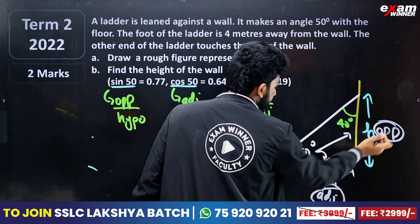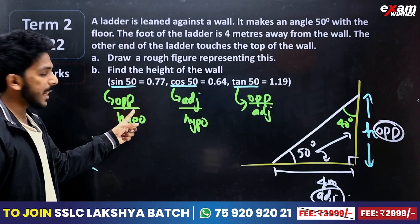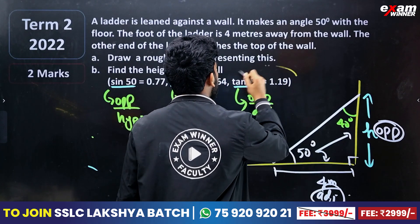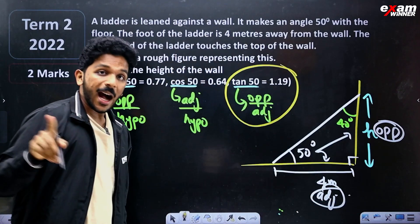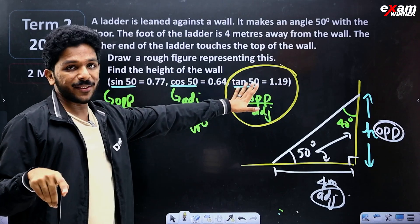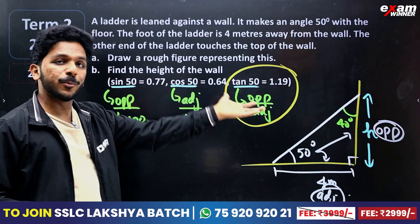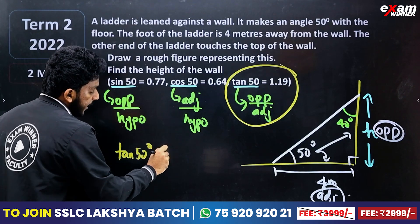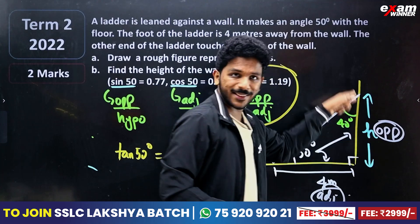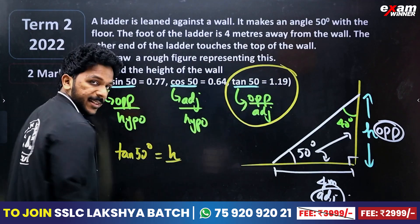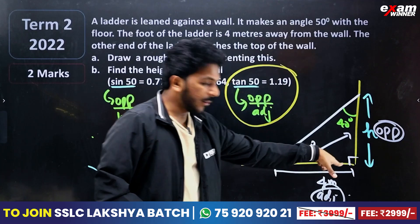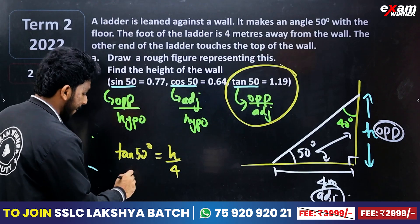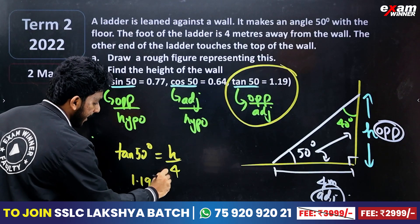So if we want to change the opposite to the adjacent — we want to change the opposite over hypotenuse — that's useful. Tan 50. If 50 opposite is height, then tan 50 equals opposite by adjacent — height by 4. So tan 50 is equal to h divided by 4. Tan 50 is 1.19. Then 1.19 is equal to h divided by 4.